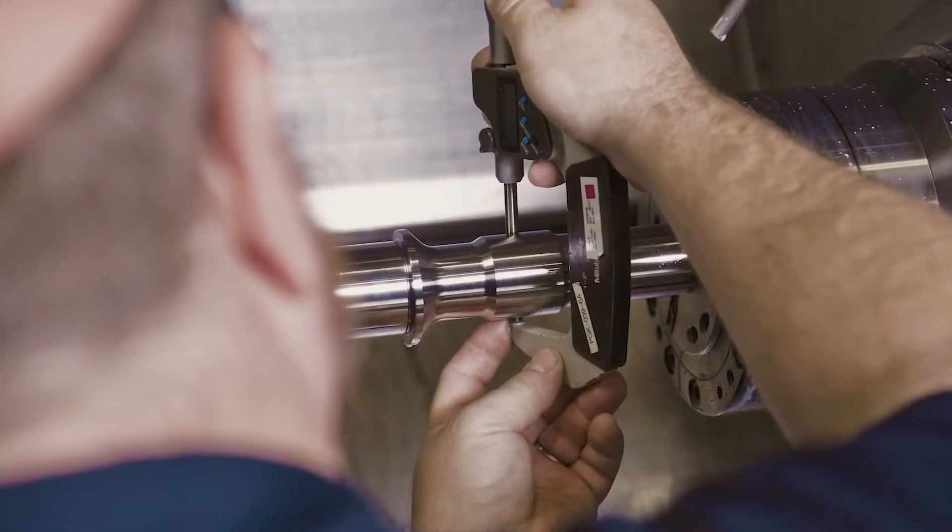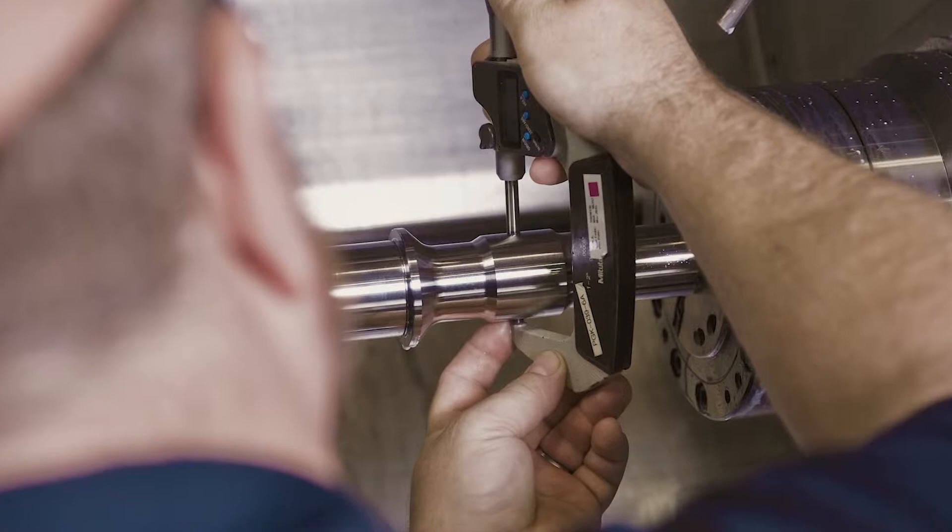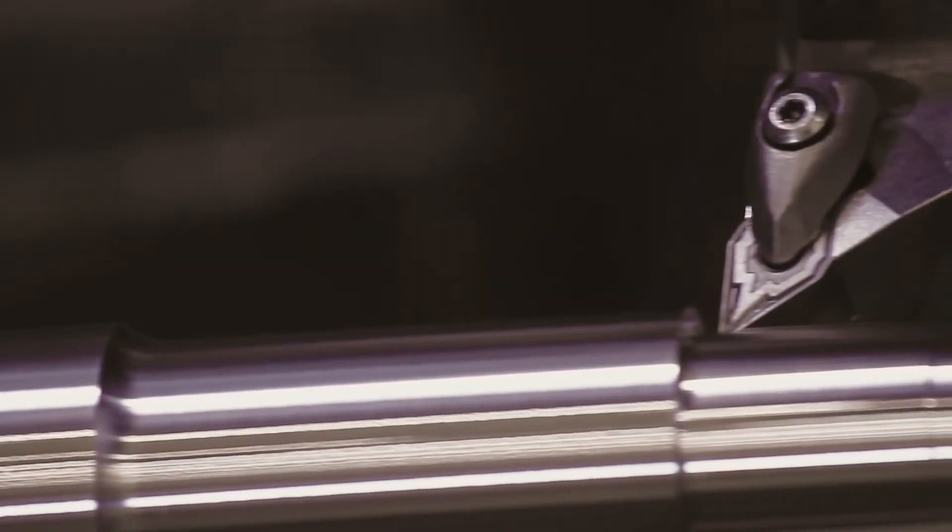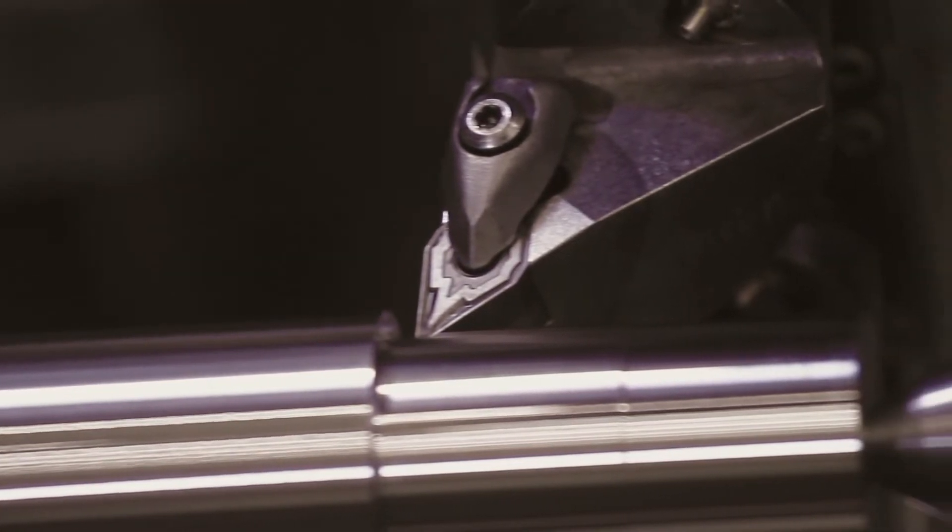As far as the turning aspect goes, the tolerances we have to hold are anywhere between plus or minus 20 microns. Our smallest bearing diameter tolerance is 30 microns for the process dimension before heat treat.